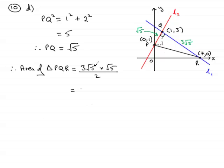Now, 3 root 5 times root 5 is just going to be the same as 3 times 5, because root 5 times root 5 is 5. 3 fives are 15, and so you have 15 over 2.